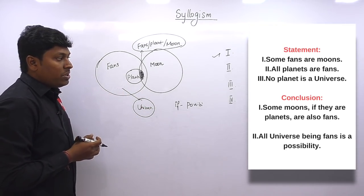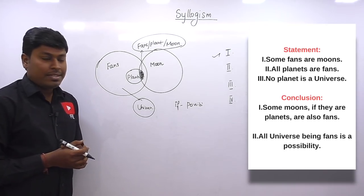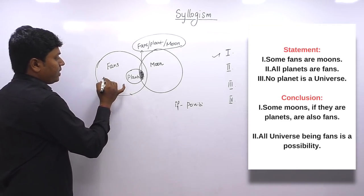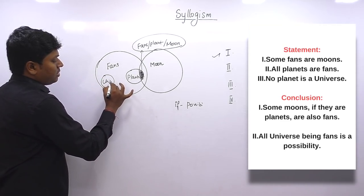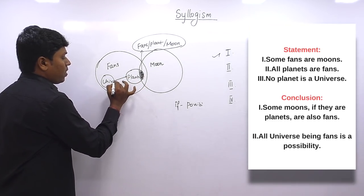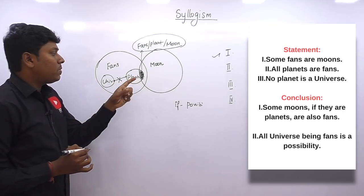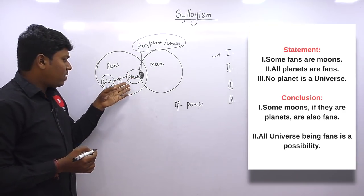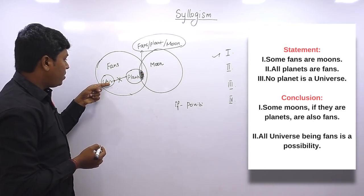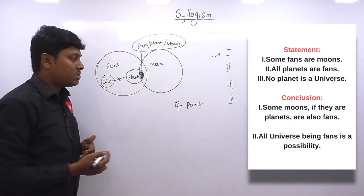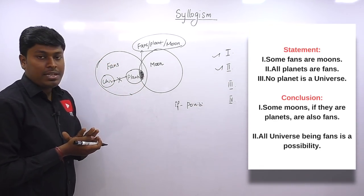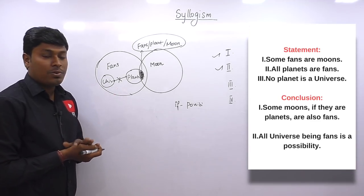Conclusion 2: all universe being fan is a possibility. We can draw a possible diagram where universe falls inside fan without touching plant, which doesn't violate the statement. So all universe being fan is possible — conclusion 2 is true. Answer for question 14: both conclusions follow.